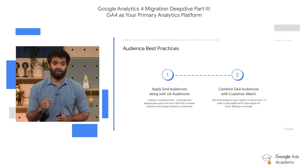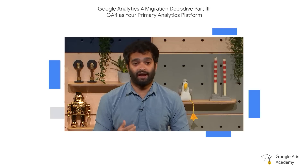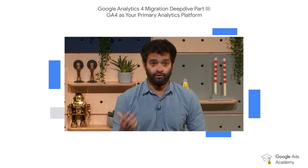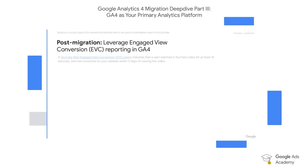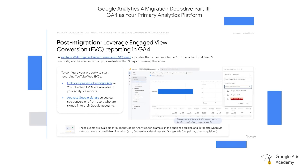Let's now take a closer look at some of the net new value adds that you can take advantage of once you have fully migrated from UA to GA4. One of the most significant is the ability to track and report engaged view conversions from YouTube ads. An engaged view conversion (EVC) occurs whenever a user watches a YouTube ad for at least 10 seconds and then, without clicking on that ad, arrives on a website and performs a conversion action within a three-day window by default. EVCs typically make up a significant chunk of conversions stemming from YouTube ads, and previously in Universal Analytics we had no way of tracking or reporting on EVCs. The good news is that this is now supported in GA4.